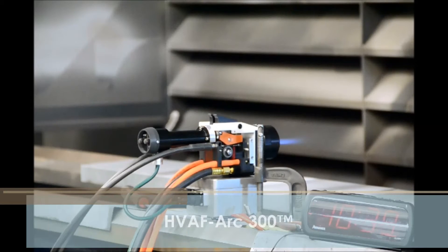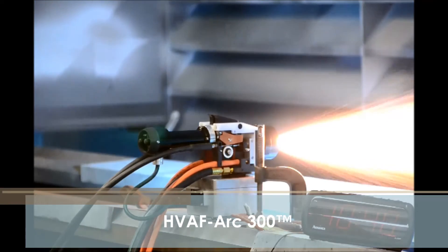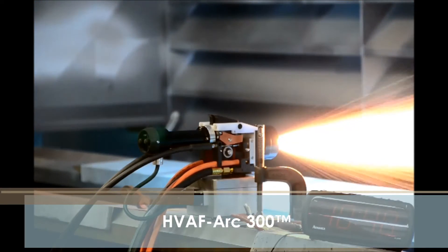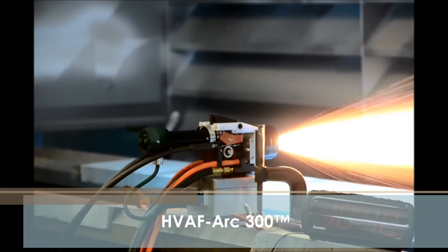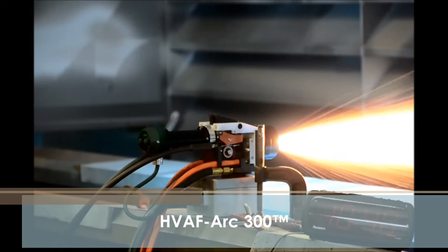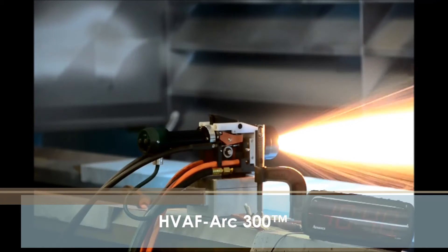The HVAF Arc 300 is a twin wire arc spray system designed for cost-effective deposition of low porosity, ultra-dense coatings from solid and cord wires of 1.6 to 2.3 mm in diameter.